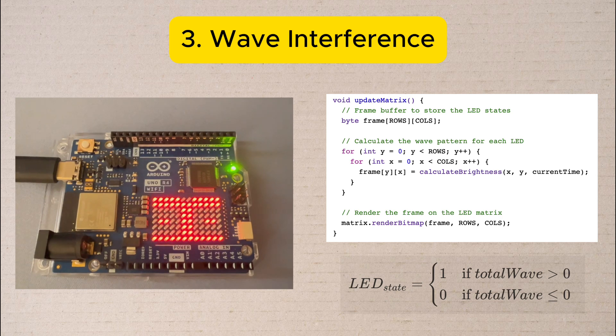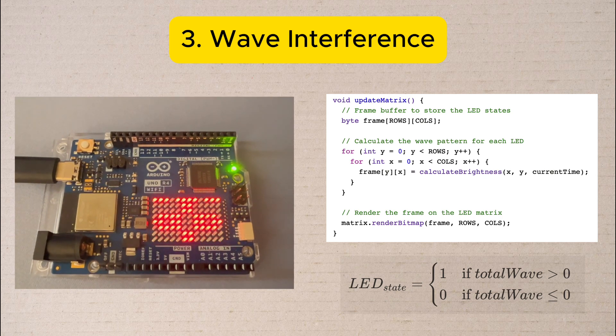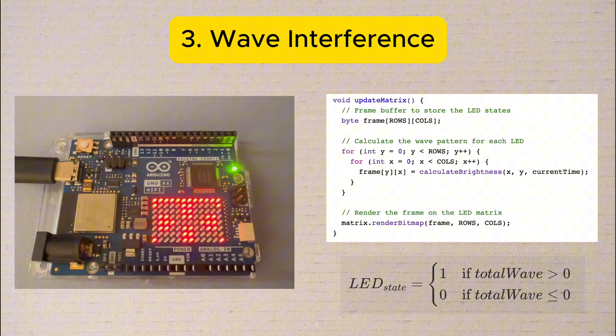We find out the amplitude of the resultant wave at each point and turn on the LED if it is positive, otherwise it is turned off.